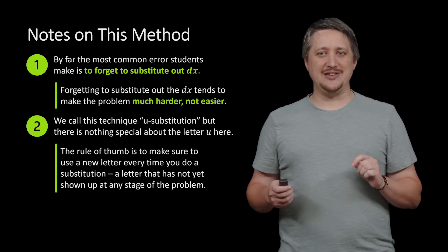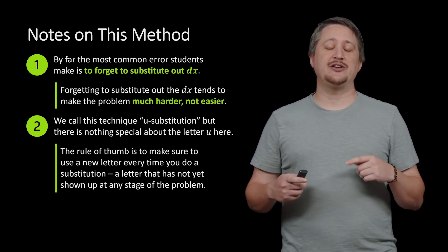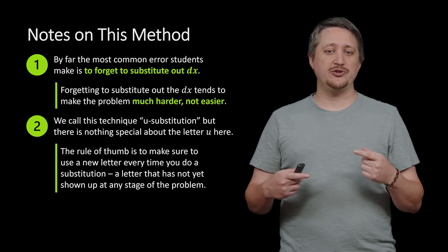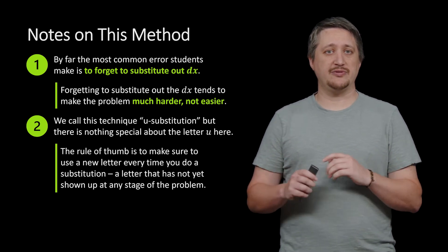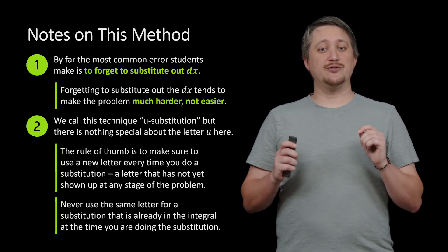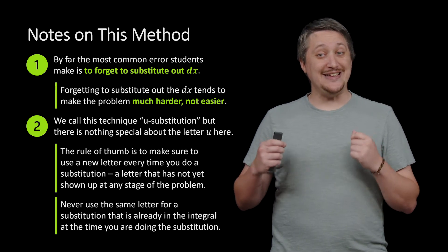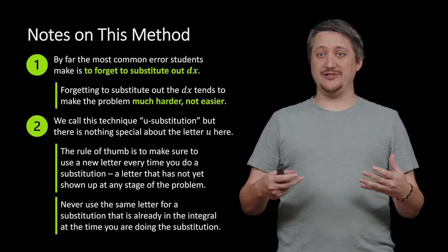The rule of thumb though, and this is sort of the easy part to mess up, especially if you're doing more than one of these, the rule of thumb is to make sure every time you do a substitution to use a new letter every time. So in particular, you want to use a letter that hasn't shown up anywhere in the problem thus far, and never ever use the same letter that's already in the integral.